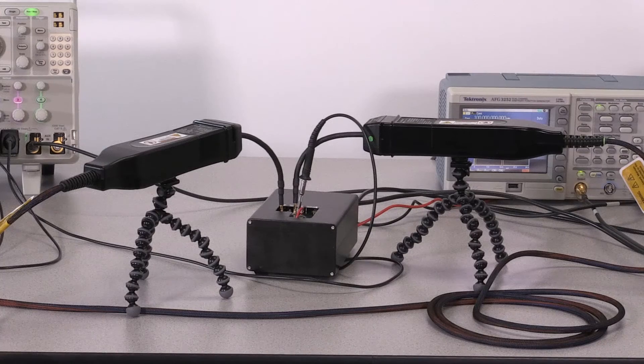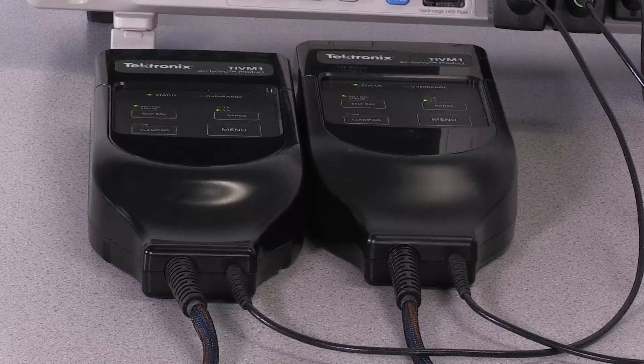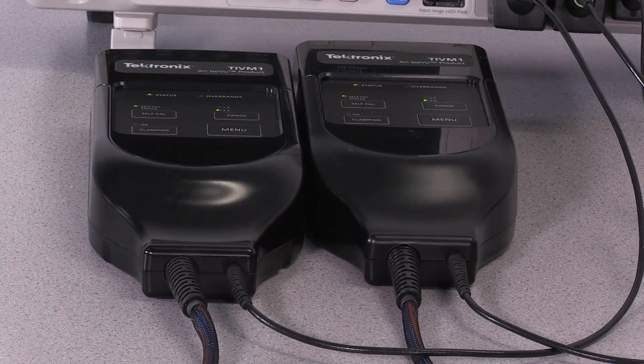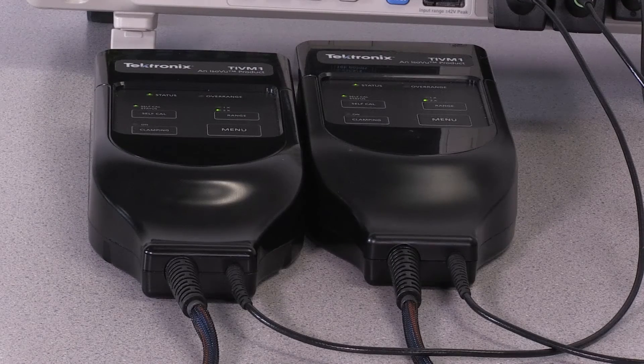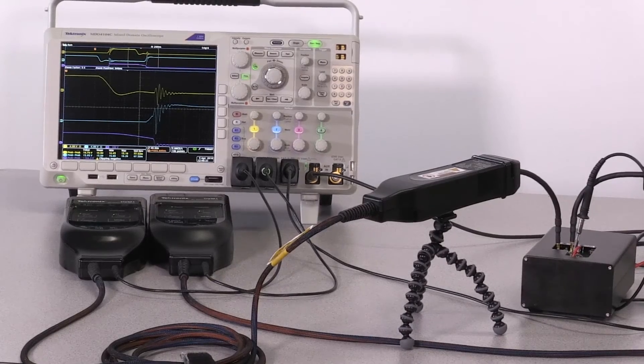With its complete galvanic isolation, the TEC ISOView system has million to one common mode rejection ratio at 100 megahertz. It has gigahertz of bandwidth and 2000-volt common mode rating.